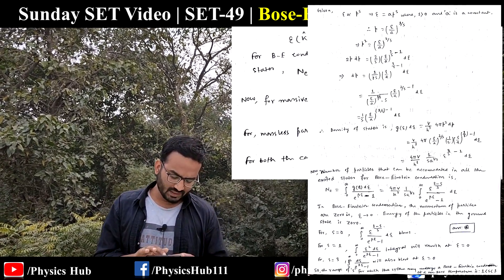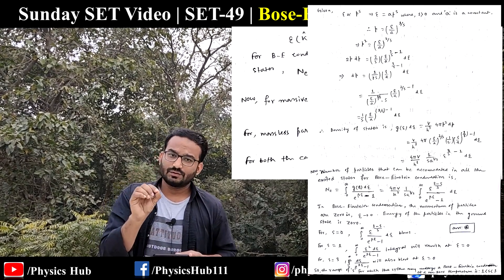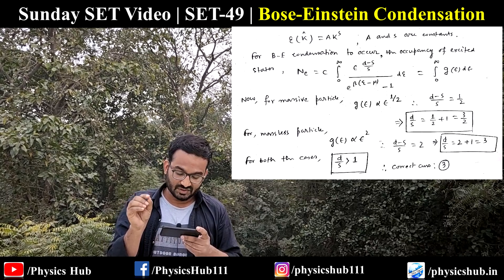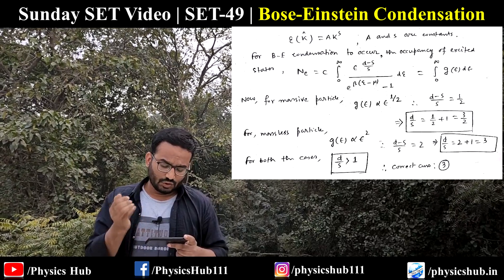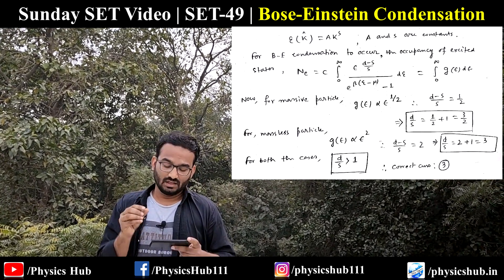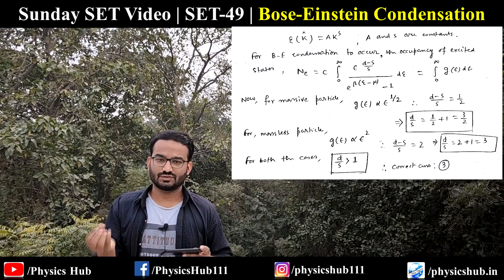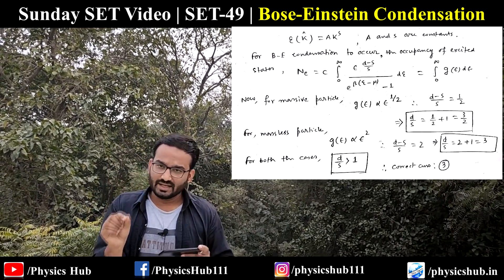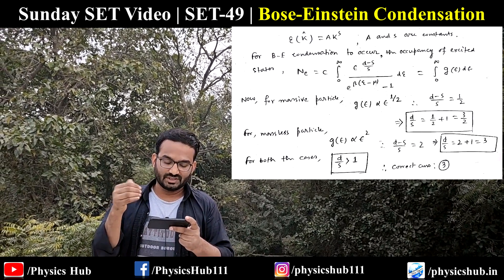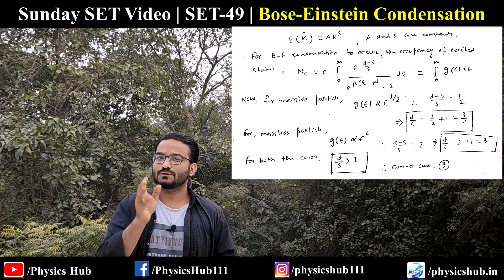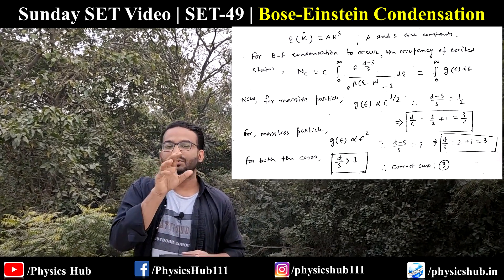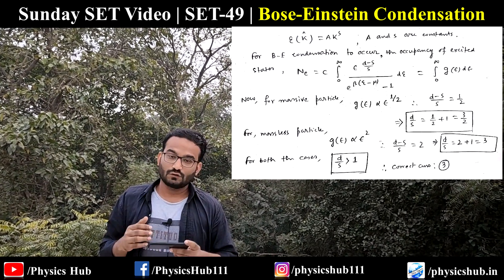We test values of s. For s = 0: the factor 1/s blows up, so not possible. For s = 1: the integral ∫₀^∞ E² dE / [e^(βE) − 1] vanishes — the denominator becomes zero at E = 0 and the integral blows up, so not possible. For s = 3: similarly the integral ∫₀^∞ E^0 dE / [e^(βE) − 1] also blows up at E = 0. Therefore the range of s for which the system can undergo Bose-Einstein condensation is 1 < s < 3, matching option A.